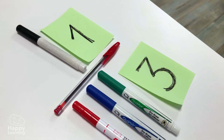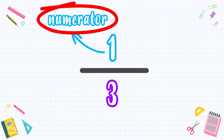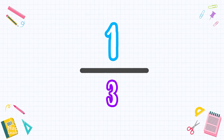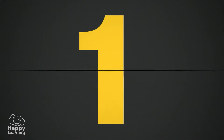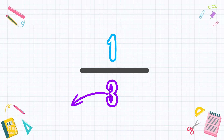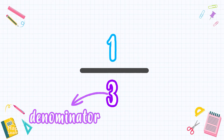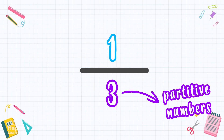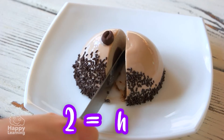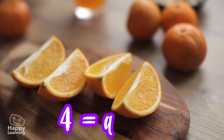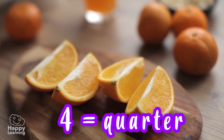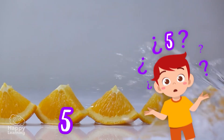When we read fractions, we first say the top number — the numerator. The numerator is read as we normally do with cardinal numbers: one, two, three, four, five. Then we name the denominator using partitive numbers. For example, if it's a two we say 'half,' if it's a three we say 'a third,' if it's a four we say 'a quarter,' if it's a five we say 'fifth.'